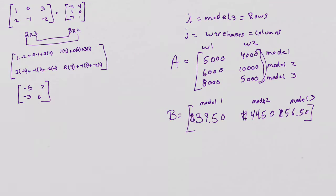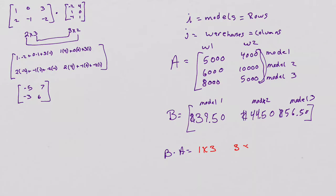It tells us to compute B times A. So let's do that. Let's look at the order first. When I look at B, I have one row by three columns. And my A has three rows by two columns. These match, so I can multiply them. I know that I'm going to get a 1 by 2 for an answer.